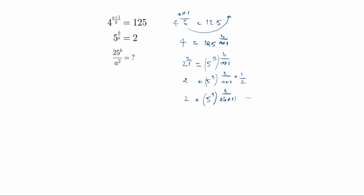So this is the first equation: 2 equals 5 to the power 3b by 2a plus 1. For the second equation, we have 5 power b by a is equal to 2. Now you can see these two equations — compare them, since both sides equal 2.